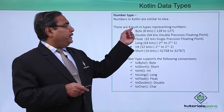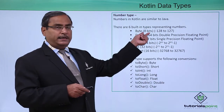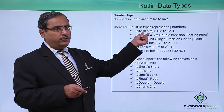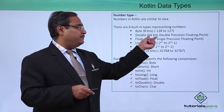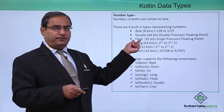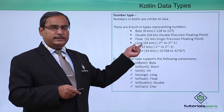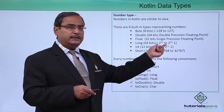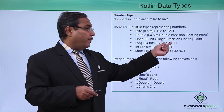There are 6 built-in types representing numbers. Byte is 8 bits; as it is signed, it ranges from -128 to +127. Double is 64 bits, a double precision floating point number. Float is 32 bits, a single precision floating point number. Long is 64 bits, ranging from -2 to the power of 63 to +2 to the power of 63 minus 1.